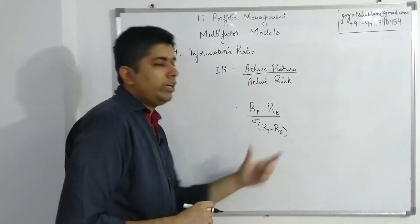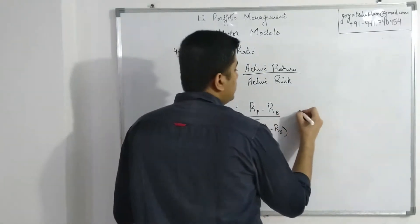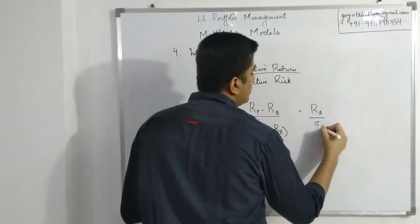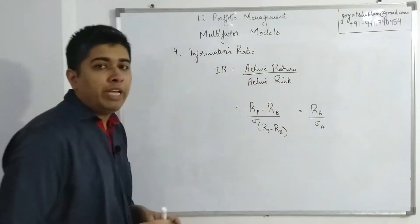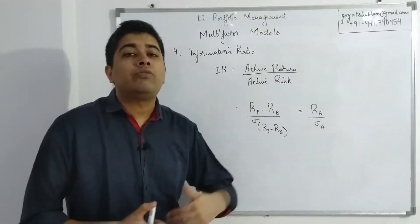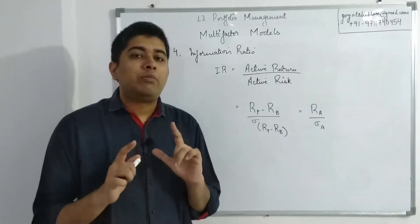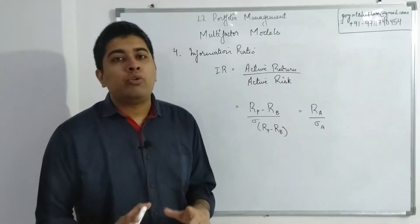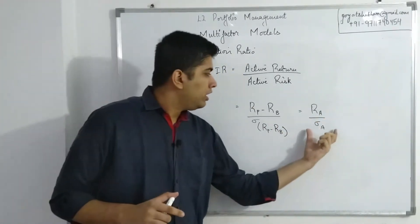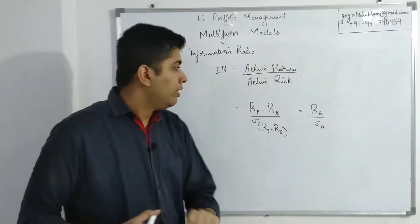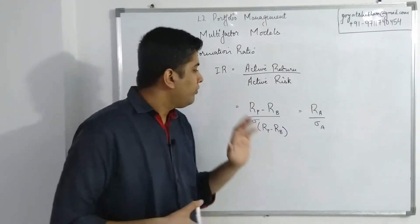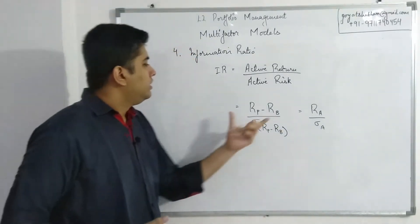Active risk is the standard deviation of active returns. In notation, active return is denoted as Ra and active risk is denoted as σa. At Level 2, Ra specifically denotes active return — not the return of a security or portfolio A — and σa denotes active risk. So this is the common structure of the information ratio.